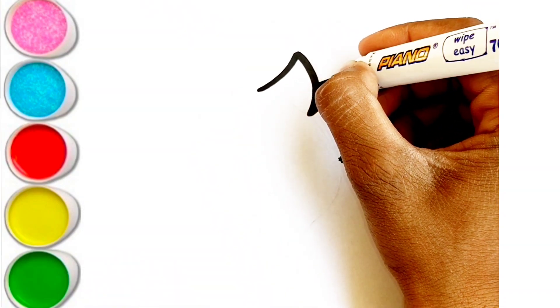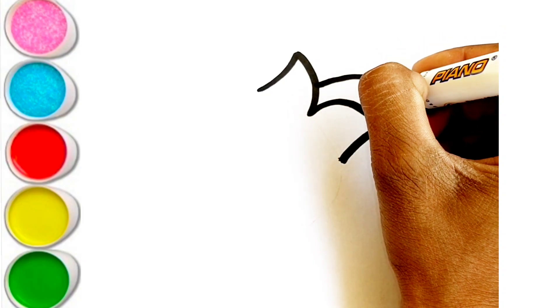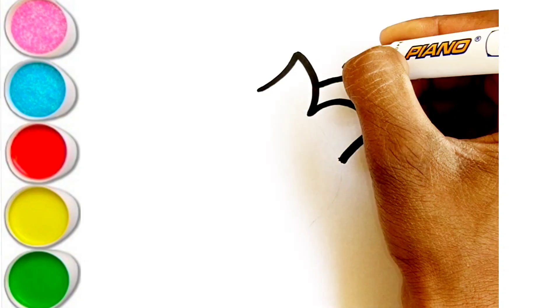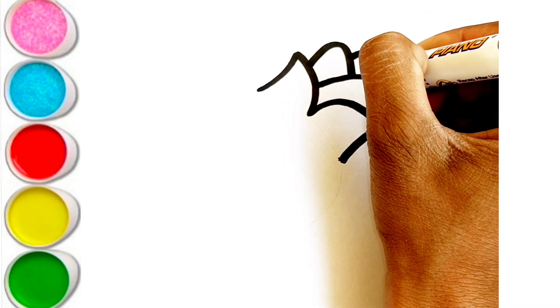E is for Elephant. E-E-Elephant. F is for Frog. F-F-Frog. G is for Goat. G-G-Goat. H is for Hand. H-H-H-Hand.